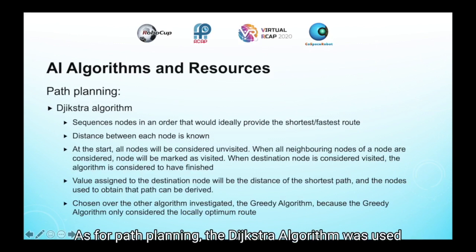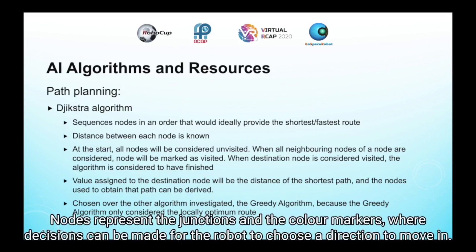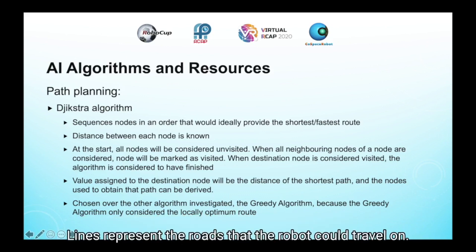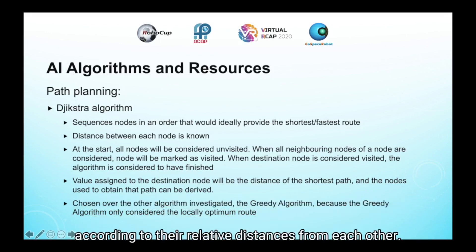For path planning, the Dijkstra algorithm was used. The map was first segmented into nodes and lines based on their features. Nodes represent the junctions and the colour markers, where decisions can be made for the robot to choose the direction to move in. They also include the features that the robot has to go past, such as the waypoints. Lines represent the paths that the robot could travel on. This algorithm takes each junction and each waypoint as a node in the map and sequences the points in an order that will ideally provide the fastest route, according to the relative distance from each other.